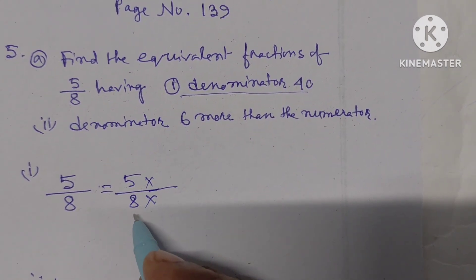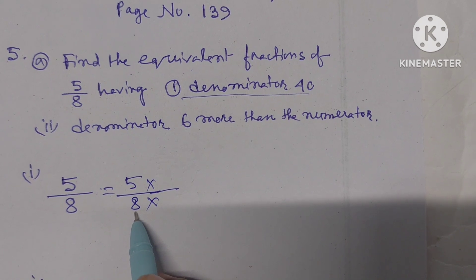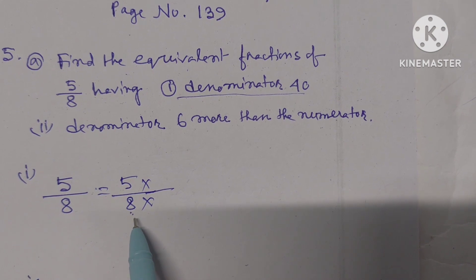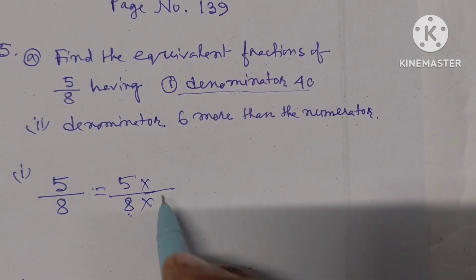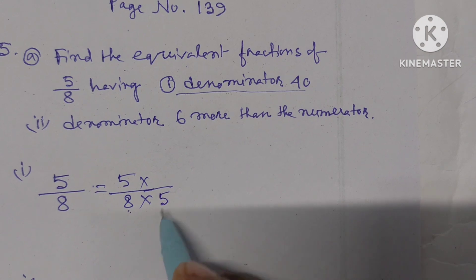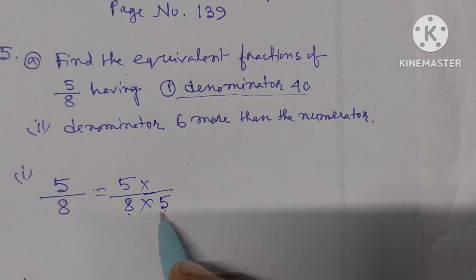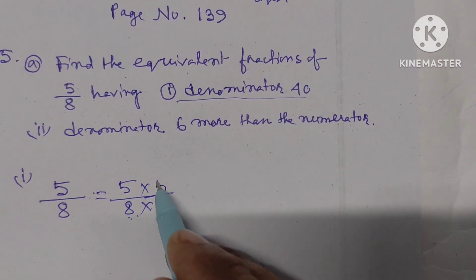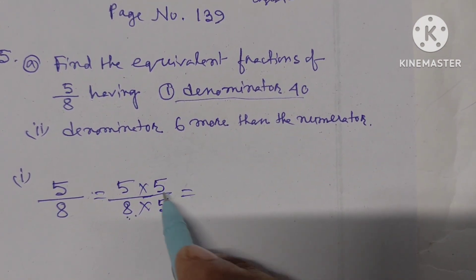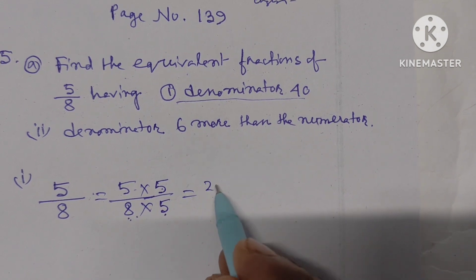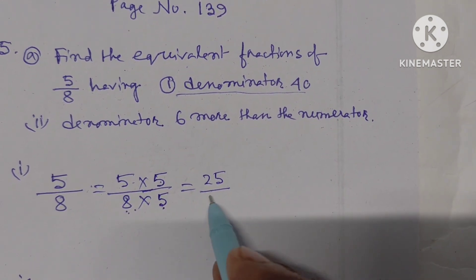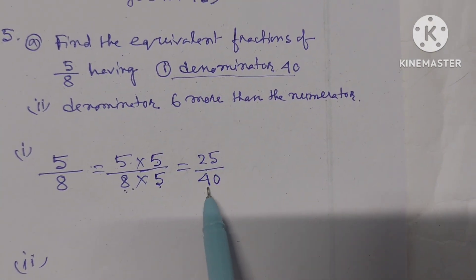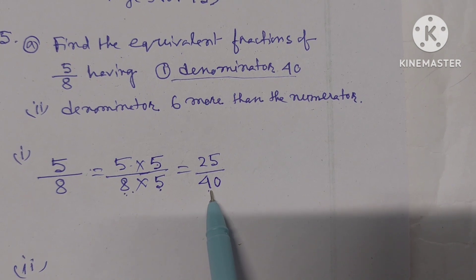Number one: denominator 40. How do we write 5 by 8 with denominator 40? We need to find what to multiply with 8 to get 40. If we multiply the denominator with 5, we also multiply the numerator by 5. 5 times 5 is 25, 5 times 8 is 40. So the denominator is 40 and the numerator is 25.